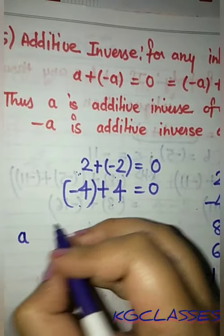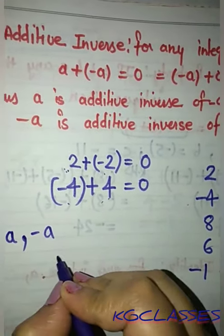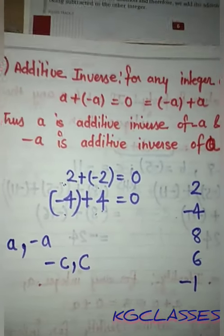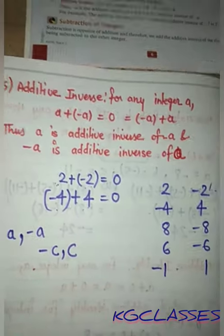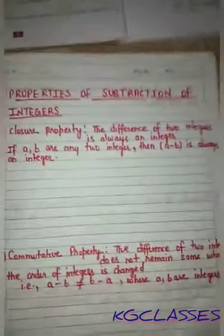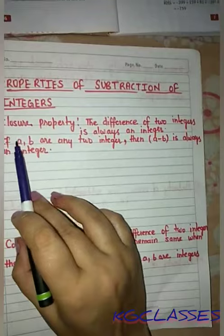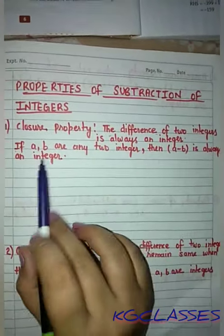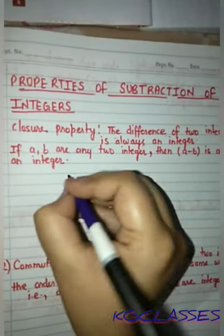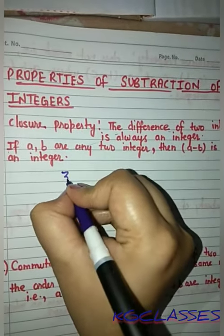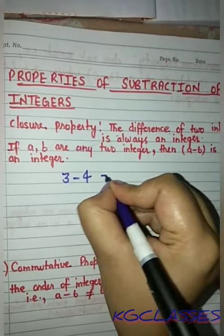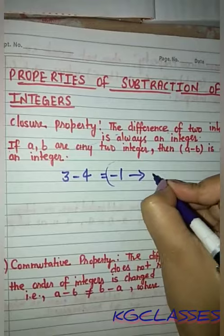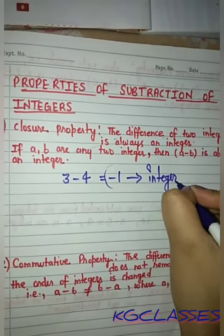Now let's look at properties of integers regarding subtraction. The first property is the closure property: the difference of two integers is always an integer. For example, if we have 3 minus 4, we get minus 1, and minus 1 is also an integer. So we call this the closure property.